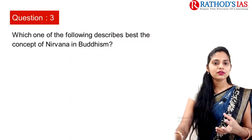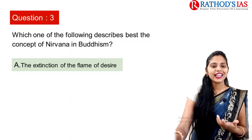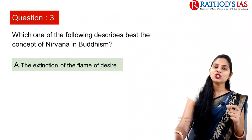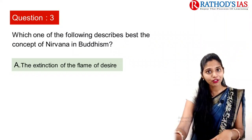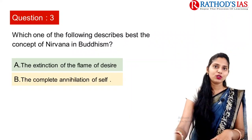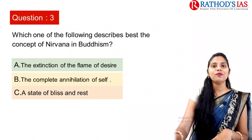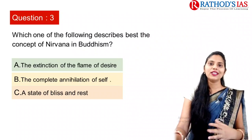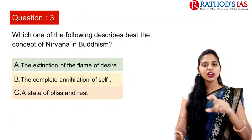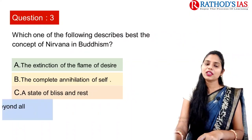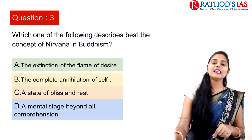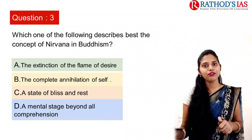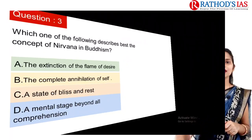Now let's see the options. Option A is the extinction of the flame of desire — actually, the root word of Nirvana means 'to blow out,' meaning extinction of the flame of desire. Option B is complete annihilation of self — not at all. Option C is a state of bliss and rest — that applies more to Mahaparinirvana, the death stage. Option D is a mental stage beyond all comprehension. The correct option is A: extinction of the flame of desire.